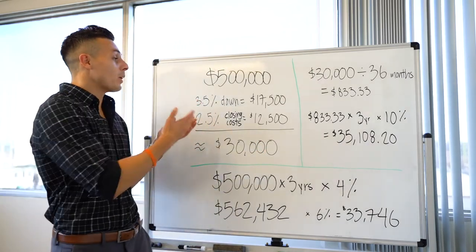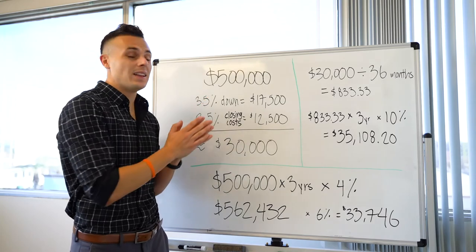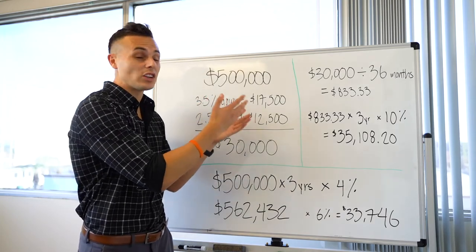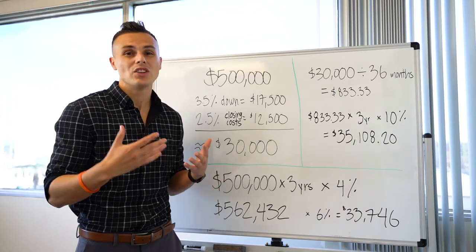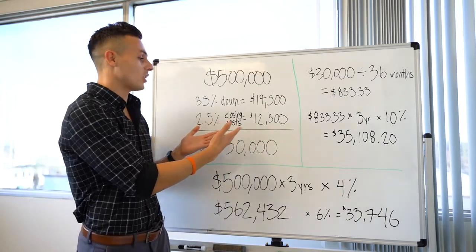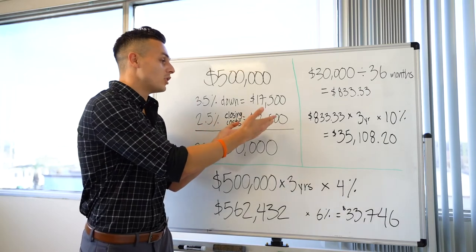So we're looking at about 3.5% down. That's $17,500. Closing cost is typically around 2%. We're going to round it up just in case, so we're going to say 2.5% for closing cost. So that's $12,500.